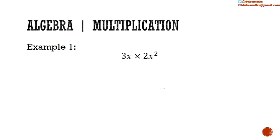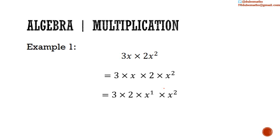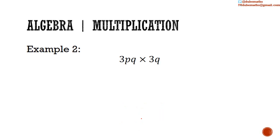Taking the first example again: 3x multiplied by 2x squared, which is the same as 3 multiplied by x multiplied by 2 multiplied by x squared. Putting the numbers and letters together, we have 3 multiplied by 2 multiplied by x to the first power multiplied by x to the second power. x to the first power multiplied by x to the second power equals x to the 1 plus 2, so 6 multiplied by x to the third power.